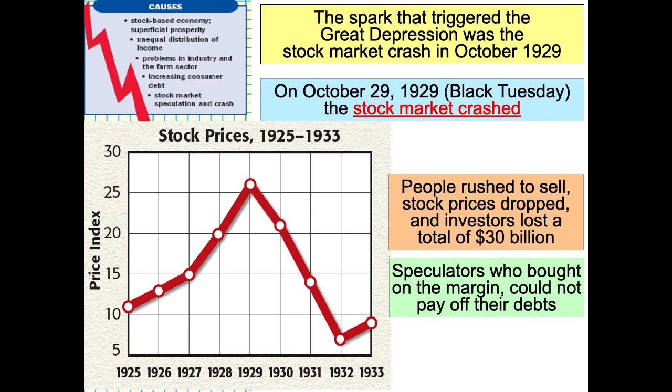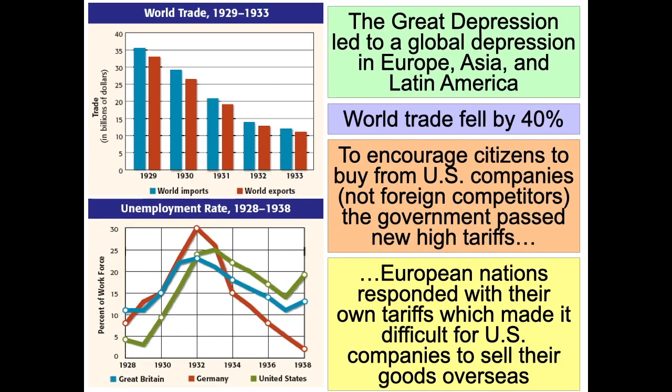The stock market crash is absolutely the spark that led to the Great Depression, and it caused a downward spiral. As banks closed, they couldn't loan money to businesses. People got fired, they weren't getting paychecks, and because they weren't getting paychecks, they weren't buying things — and because they weren't buying things, the market continued to go down. This was a complete collapse of the capitalist system — not only in America, it spread around the world. Because of the Great Depression, you had a global depression, and world trade fell by over 40%. This was going to have an enormous impact on the American system, American democracy, and our way of life.